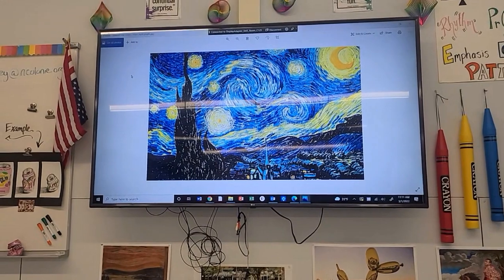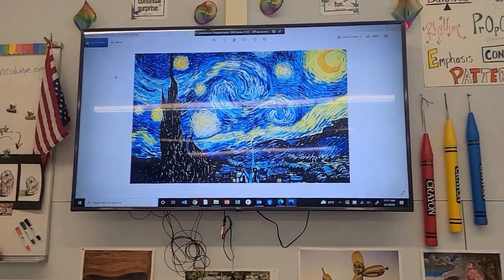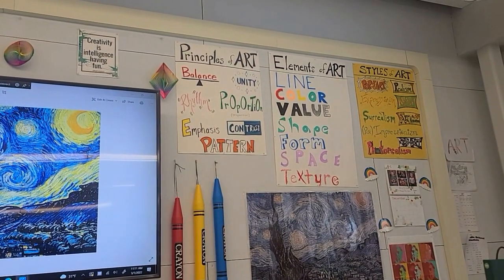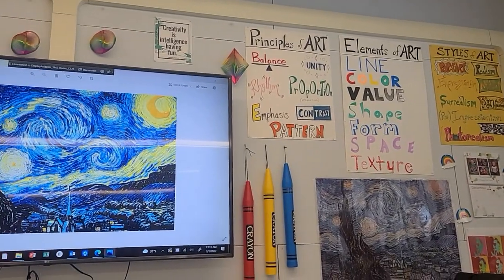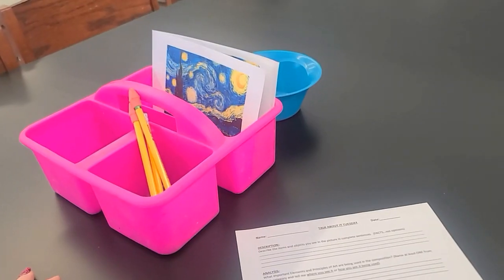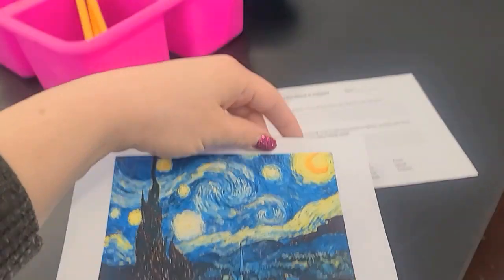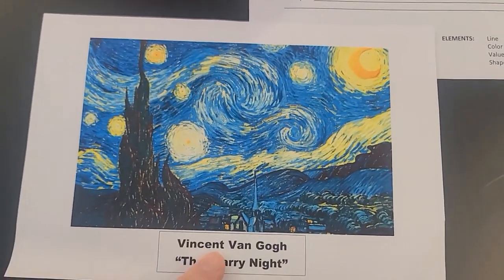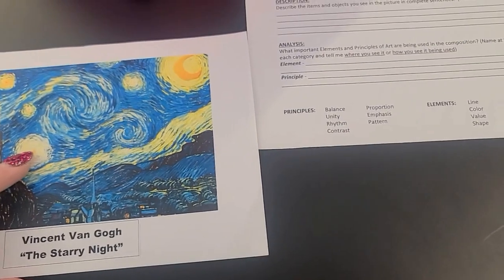When students arrive to the classroom they see the image for the day up on the board. Next to that are a variety of posters indicating different principles and elements along with visual clues to help them understand what those things mean. At the bins at their tables they'll also find a copy of that image along with the name of the artist and the title, so they can study it more closely.